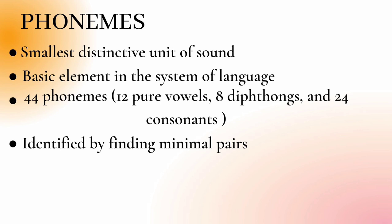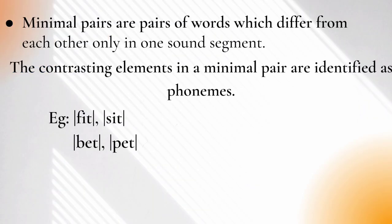Phonemes are identified by finding minimal pairs. What is a minimal pair? Minimal pairs are pairs of words which differ from each other only in one sound segment. The contrasting elements in a minimal pair are identified as phonemes.